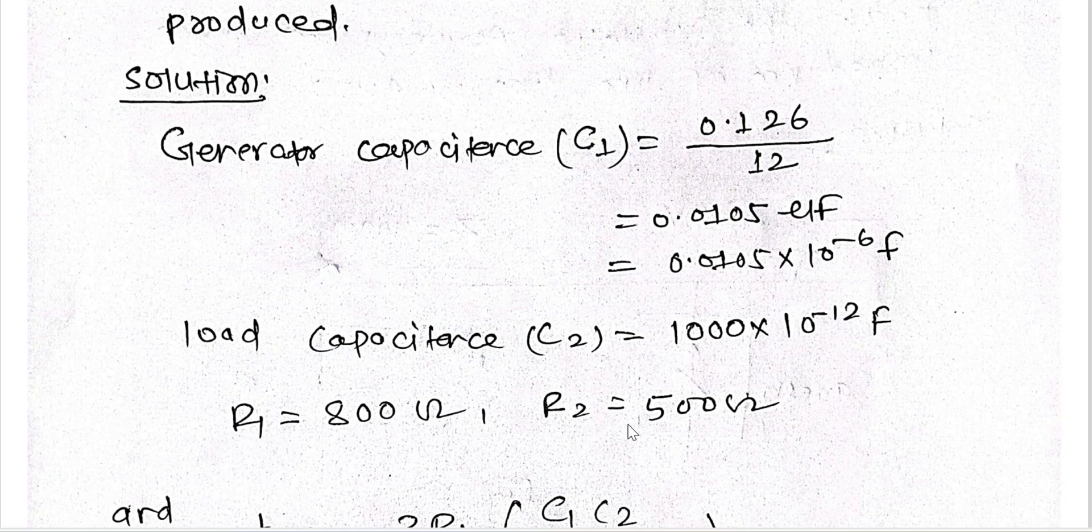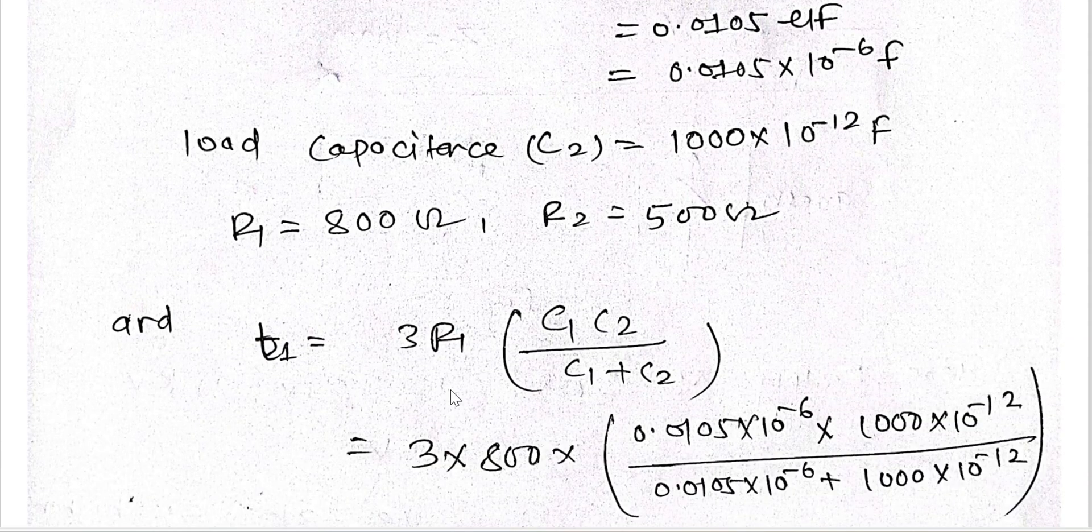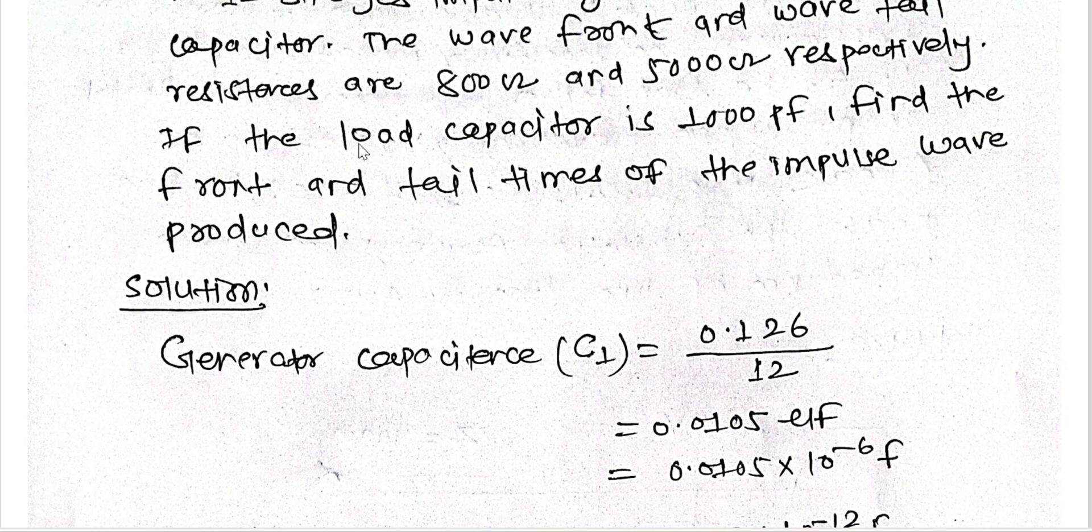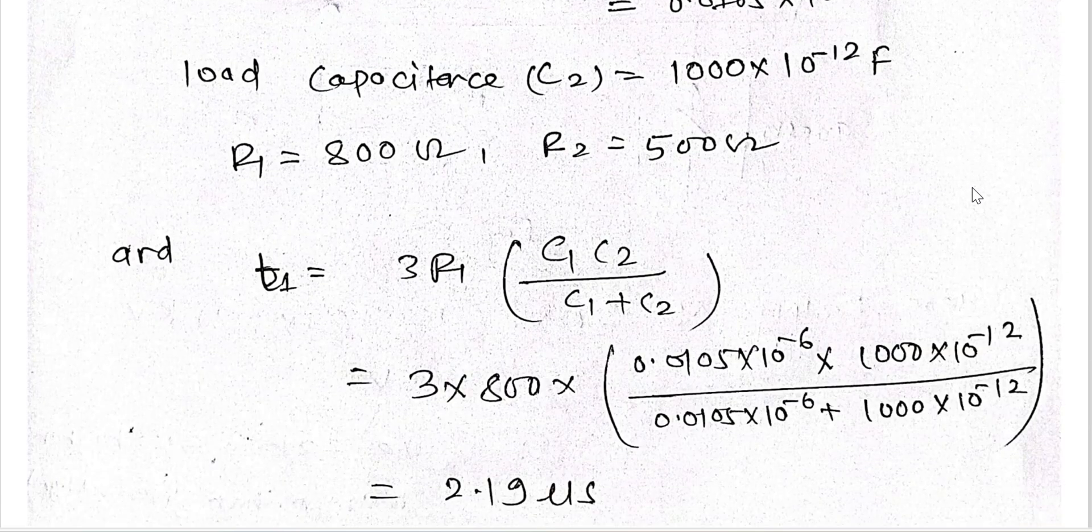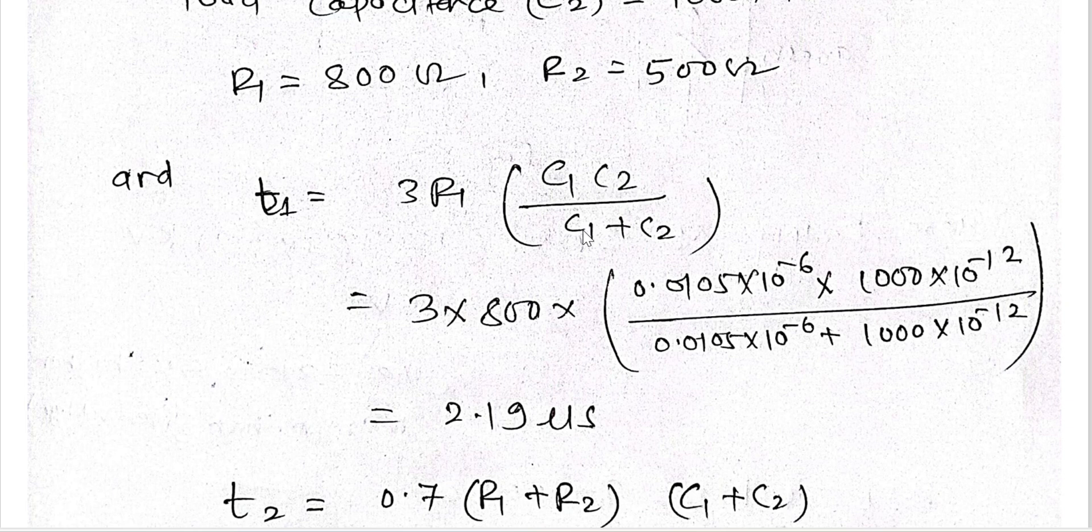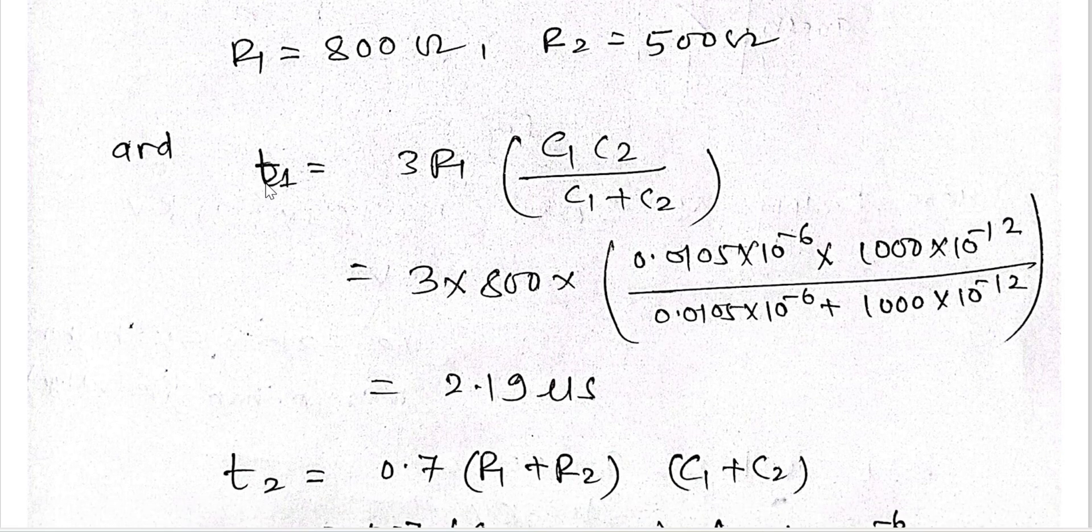R1 equals 800 ohm and R2 equals 500 ohm. T1 is the front time of the wave produced. The formula is 3 times R1 times C1 C2 divided by C1 plus C2. Putting all the values of R1, C1, and C2, we can get the result.